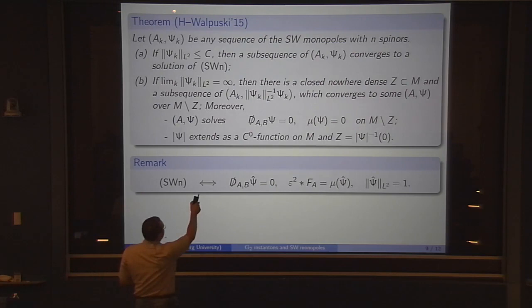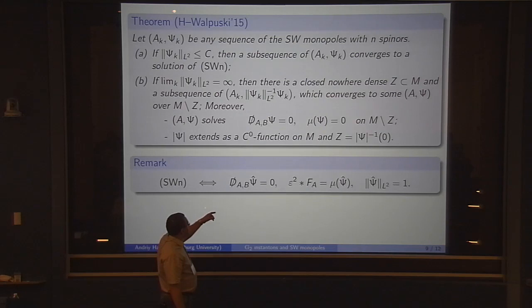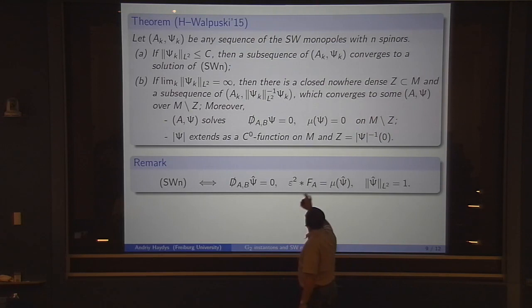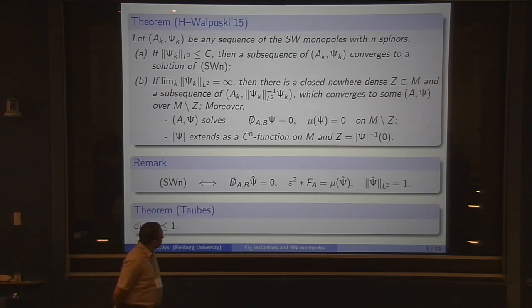Why should we expect the limit to solve these equations? The answer is given by the following observation: the norm of the spinor goes to infinity. But we can renormalize our spinor so that it has always norm 1. The price for that is that we have a small parameter epsilon in front of the curvature term. As we go to infinity, when epsilon goes to zero, this curvature term is killed. What you see in the limit is a harmonic spinor which satisfies this algebraic constraint. But this is only on the complement of some subset Z. Not much is known about Z except that it has dimension at most 1.